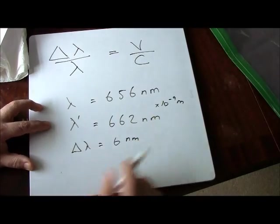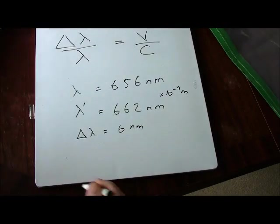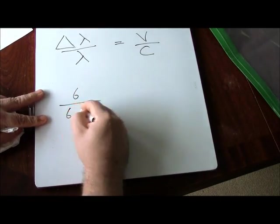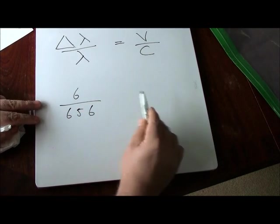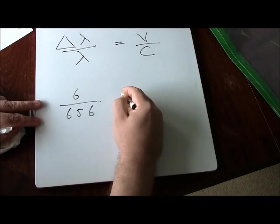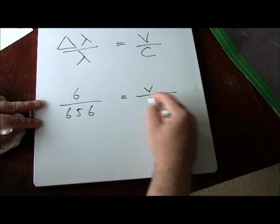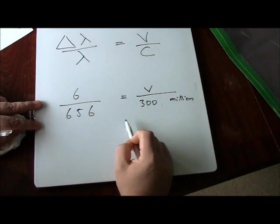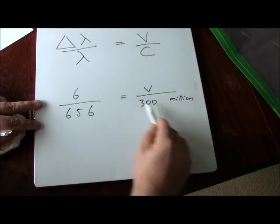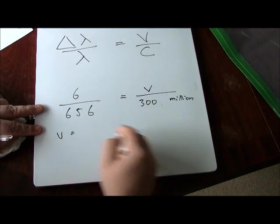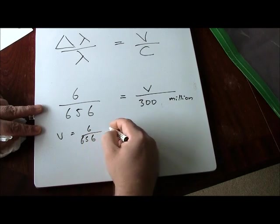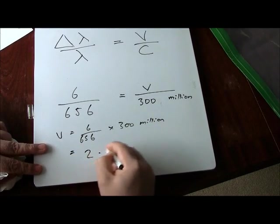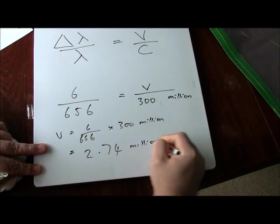So how do we calculate V then? Well, if we start putting things in the equation now, delta lambda is 6 over 656, the original. Notice I'm not bothering with nanometers now because it's on there and there, it cancels, so I don't have to. Equals V over 300 million. 300 million, so V, if we get that and put it up there, V is 6 over 656 times 300 million, equals 2.74 million meters per second.